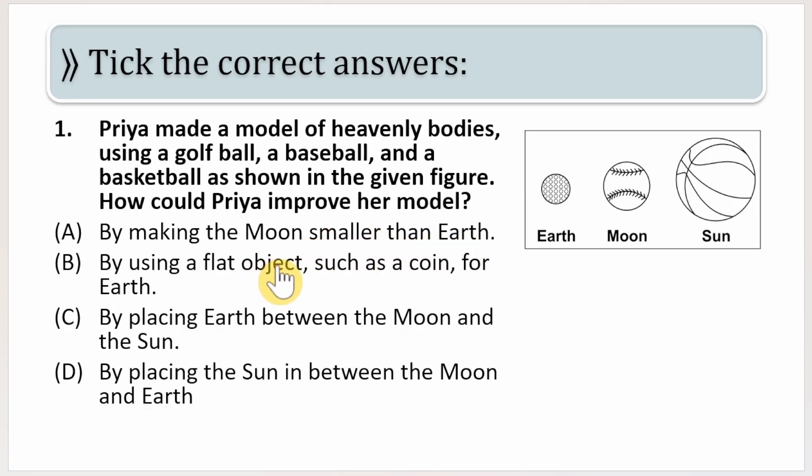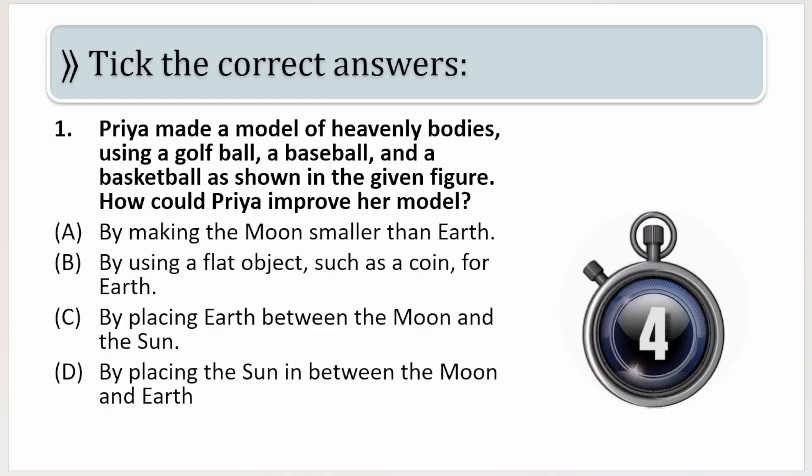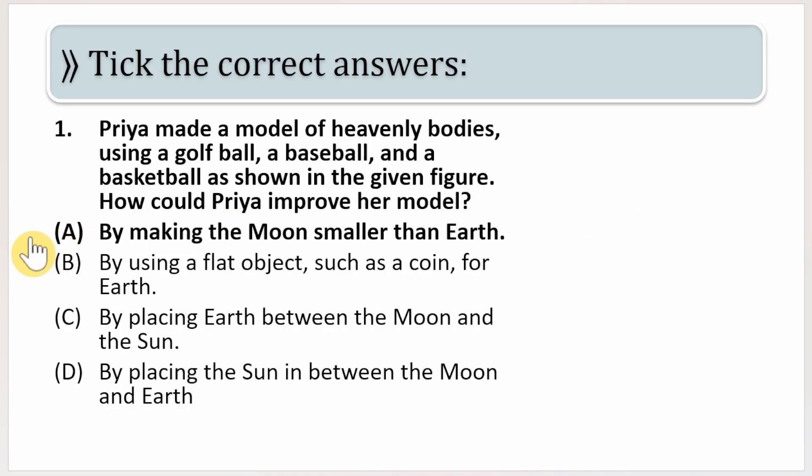By using a flat object such as a coin for Earth, by placing Earth between the Moon and the Sun, by placing the Sun in between the Moon and the Earth. And your time starts now. Time up students, the correct answer is by making the Moon smaller than the Earth, because we all know that Moon is smaller than the Earth.